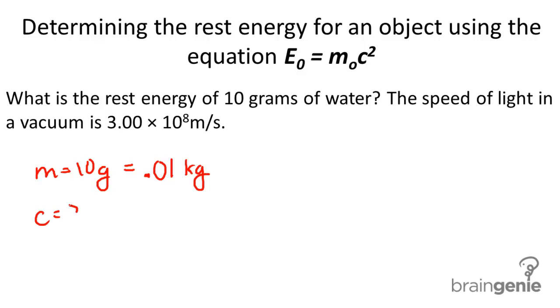We know the speed of light to be 3.00 times 10 to the 8th. And all we need to do right now is plug this information into our famous physics equation, E equals mc squared.